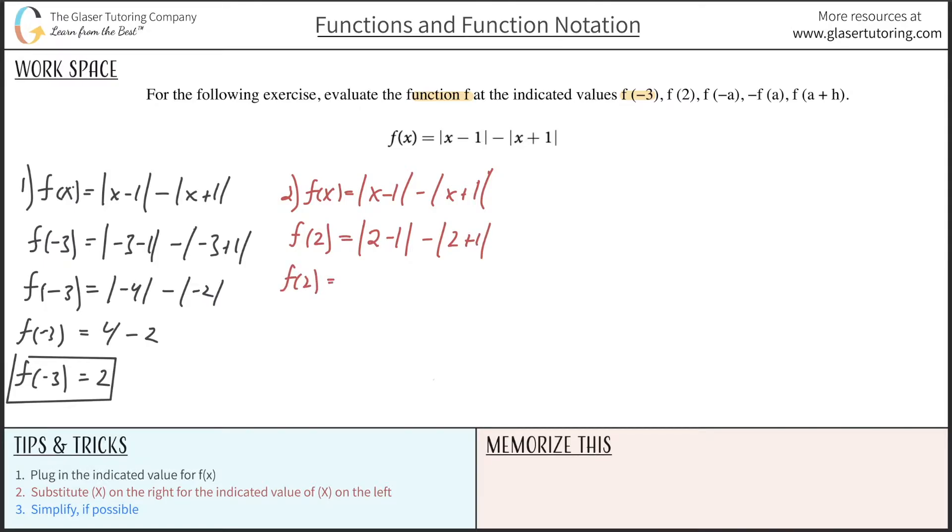f of 2 will then be absolute value of 1 minus absolute value of 3. They're both positive, so this is just a simple subtraction. So it's going to be 1 minus positive 3, which is a negative 2. And that takes care of that one.